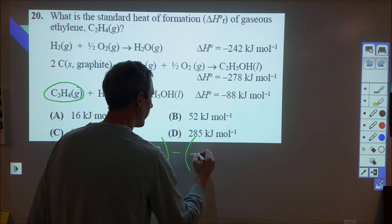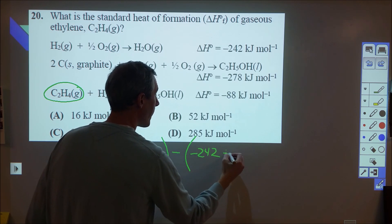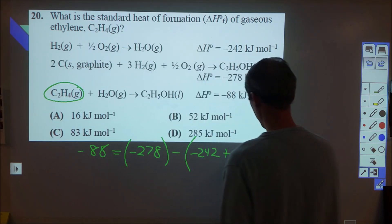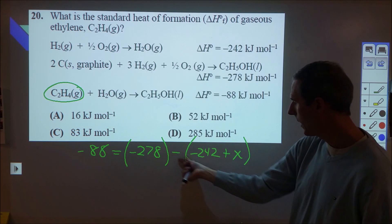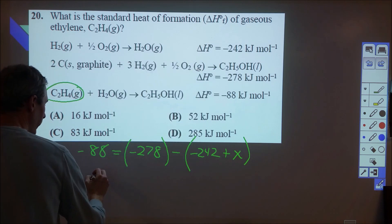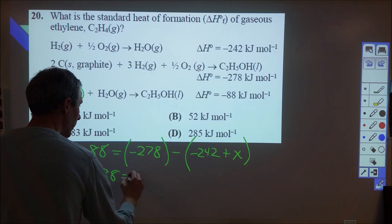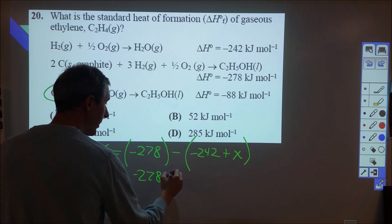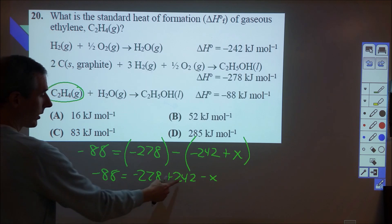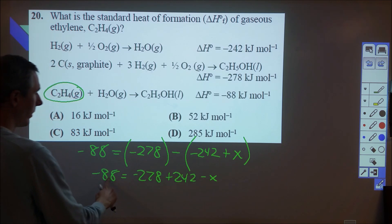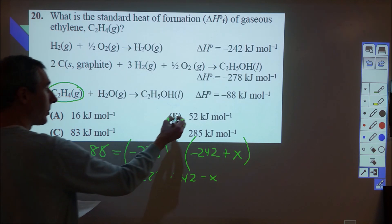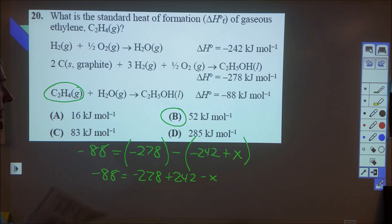And then we have this that we're looking for, so we're going to call that x. You have to be mindful that this negative is going to apply to both the x and the negative 242. If we start doing some simplification, we have negative 88 equals negative 278, and then let's say plus 242 minus x. We can combine these two, we can switch this over to here and this over to here. When we do all of that manipulation, what we end up with is a positive 52 kilojoules per mole, and that's choice B.